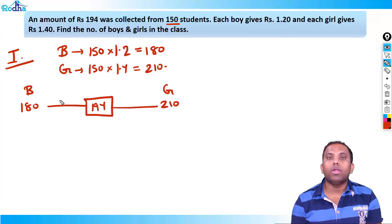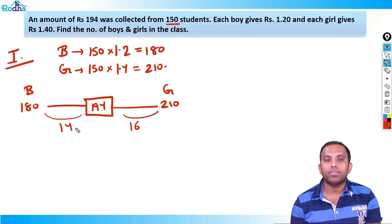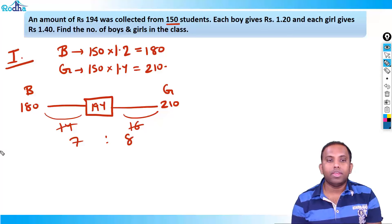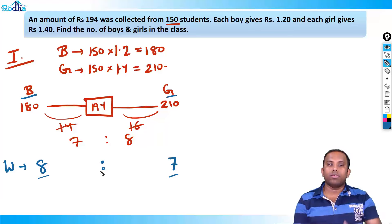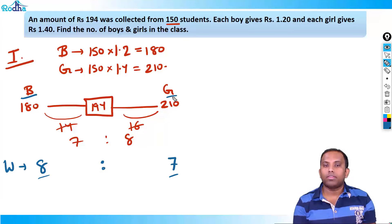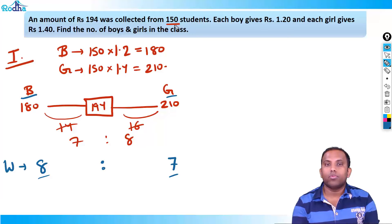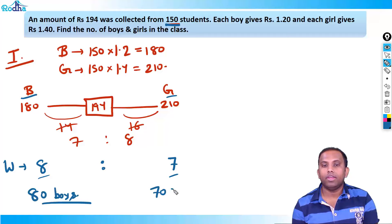The difference ratio is 14 : 16, which simplifies to 7 : 8. Therefore the weight ratio, or quantity ratio, is 8 : 7. So 8 is for boys and 7 is for girls. With 150 total students divided in the ratio 8 : 7, we get 80 boys and 70 girls.